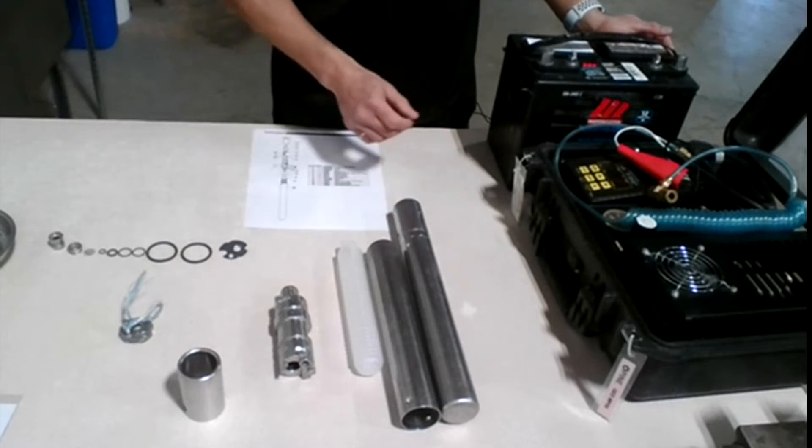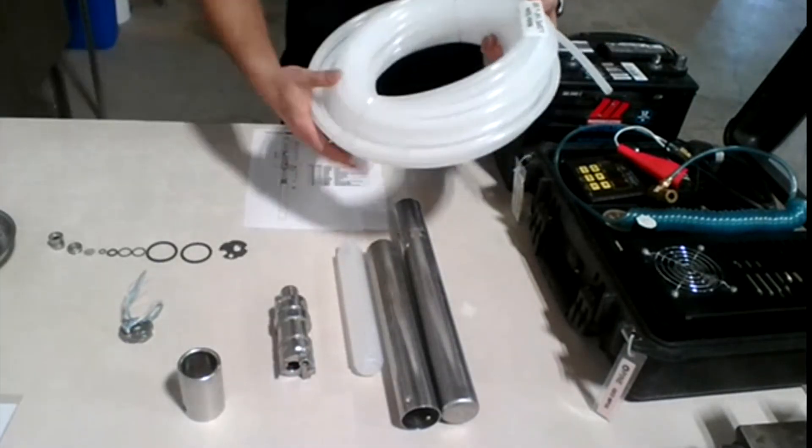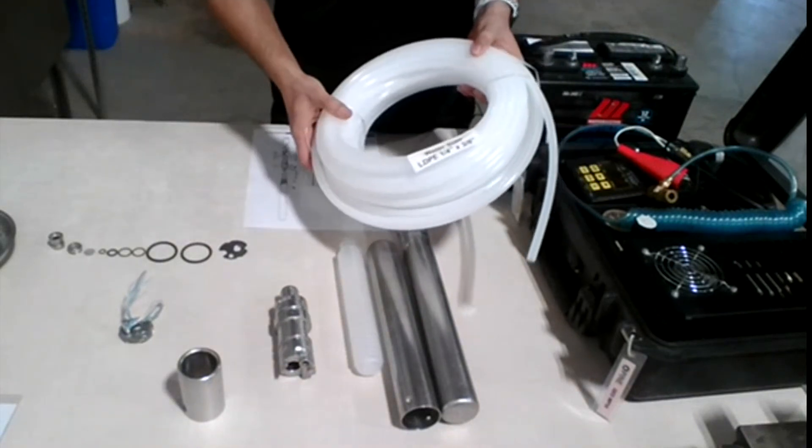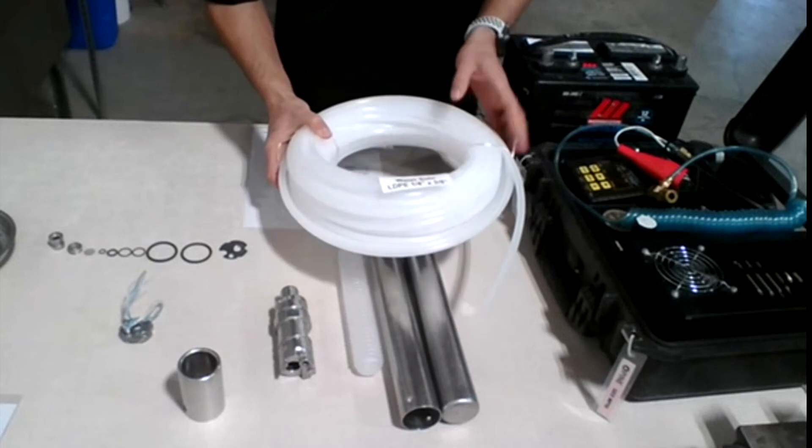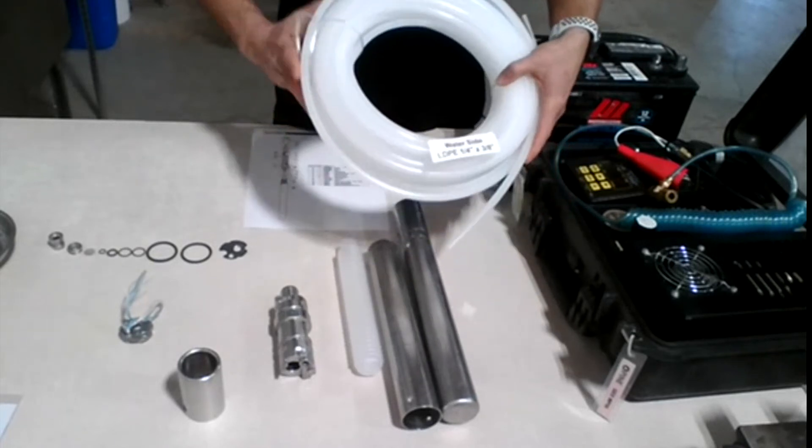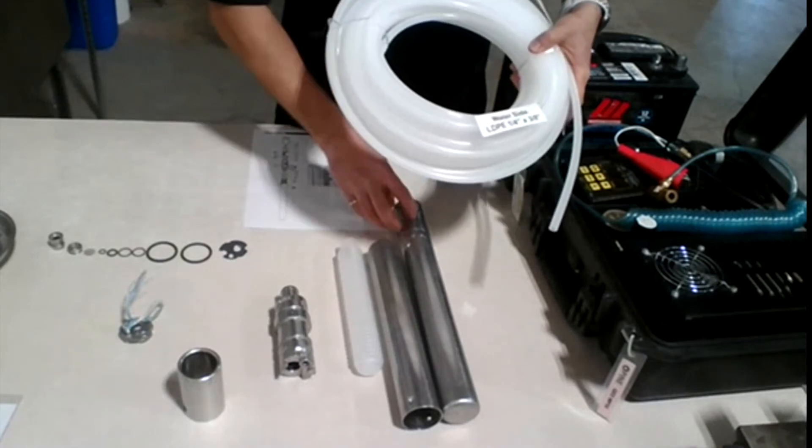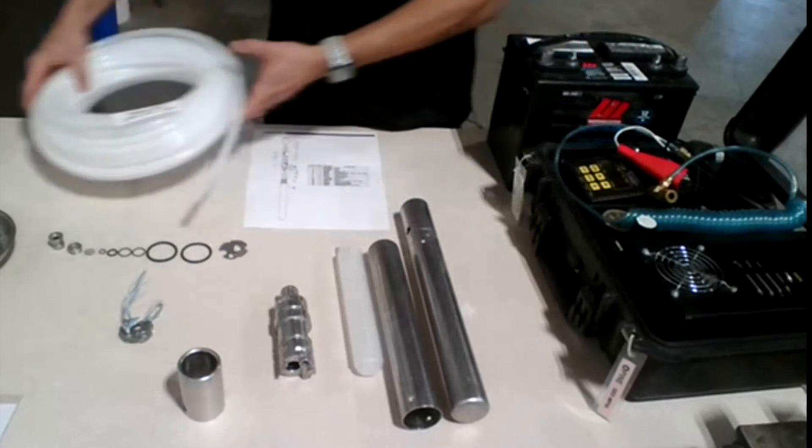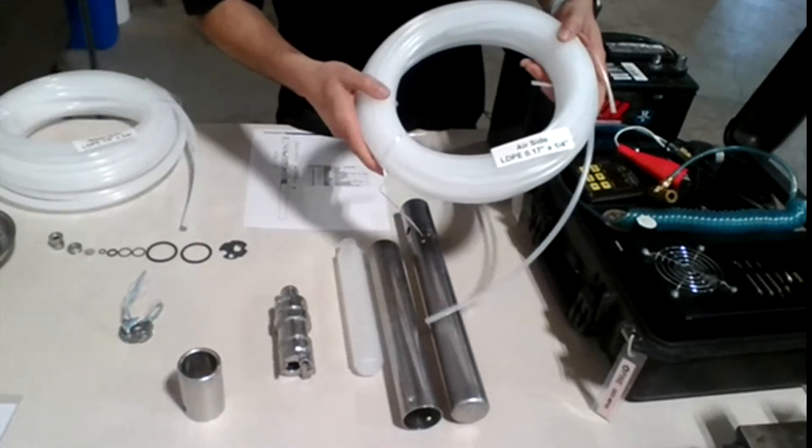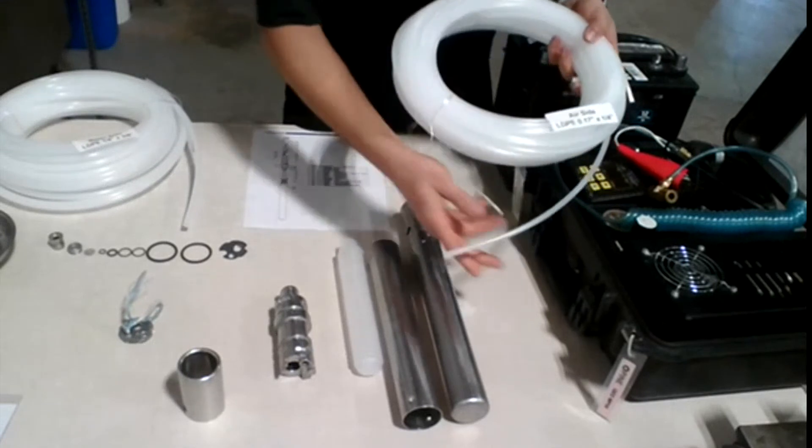So of course, with that in mind, we have the tubing here as well. So we have two tubings, we have one for the airline and one for the waterline. So we're using the quarter inch by 3.8, quarter inch by 3.8 for the water side. And for the air side, we're using the 0.17 by quarter inch tubing for the air side.